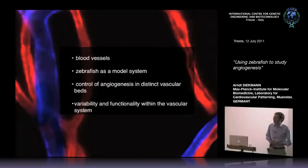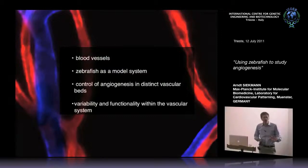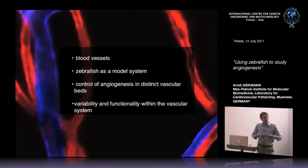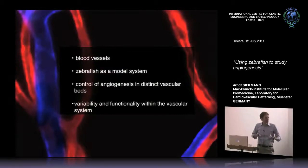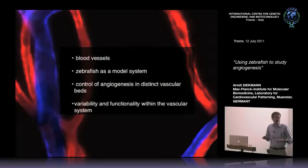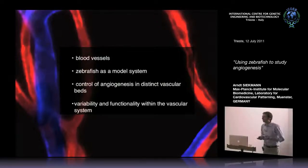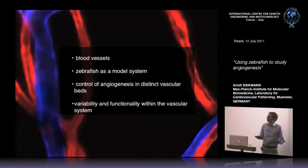Later on, I would like to talk about our recent data where we try to find out how variability arises in the vascular system, because everybody's vascular system looks different, but still it works in every person. So how is functionality ensured such that variability is kept within certain borders?